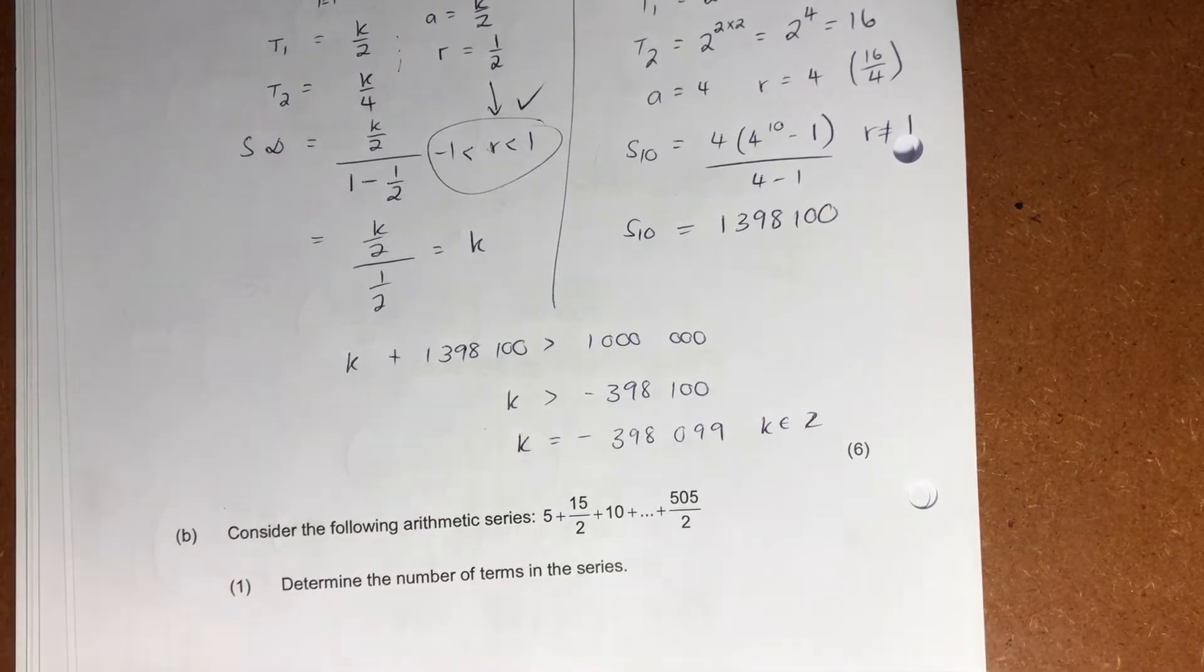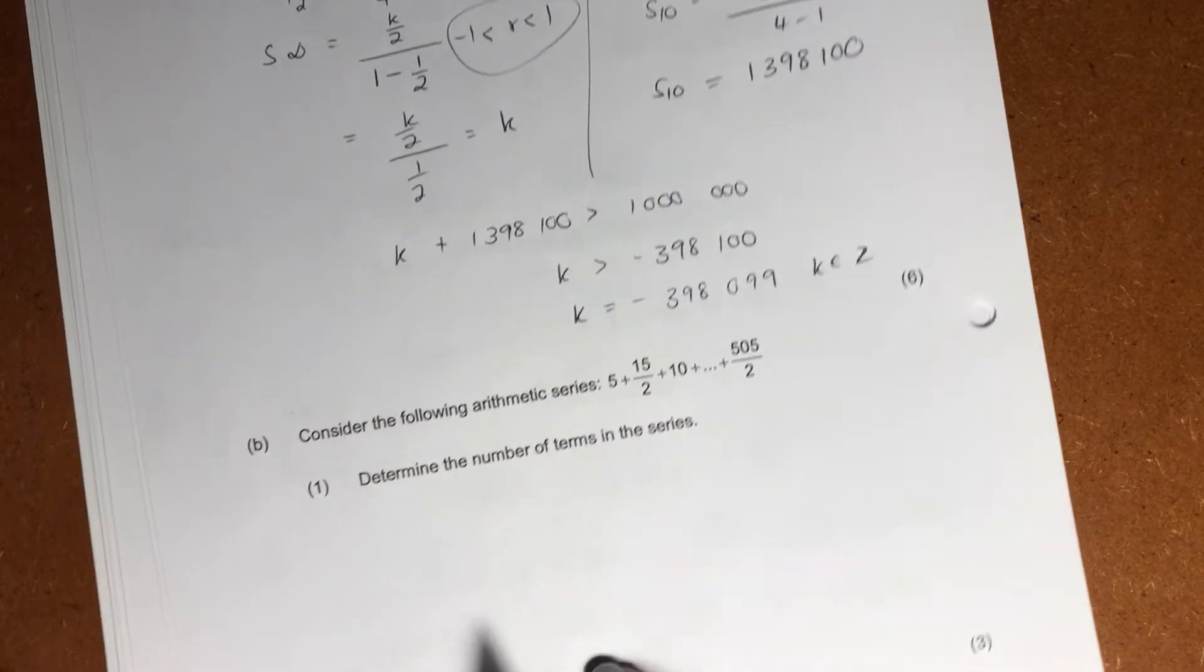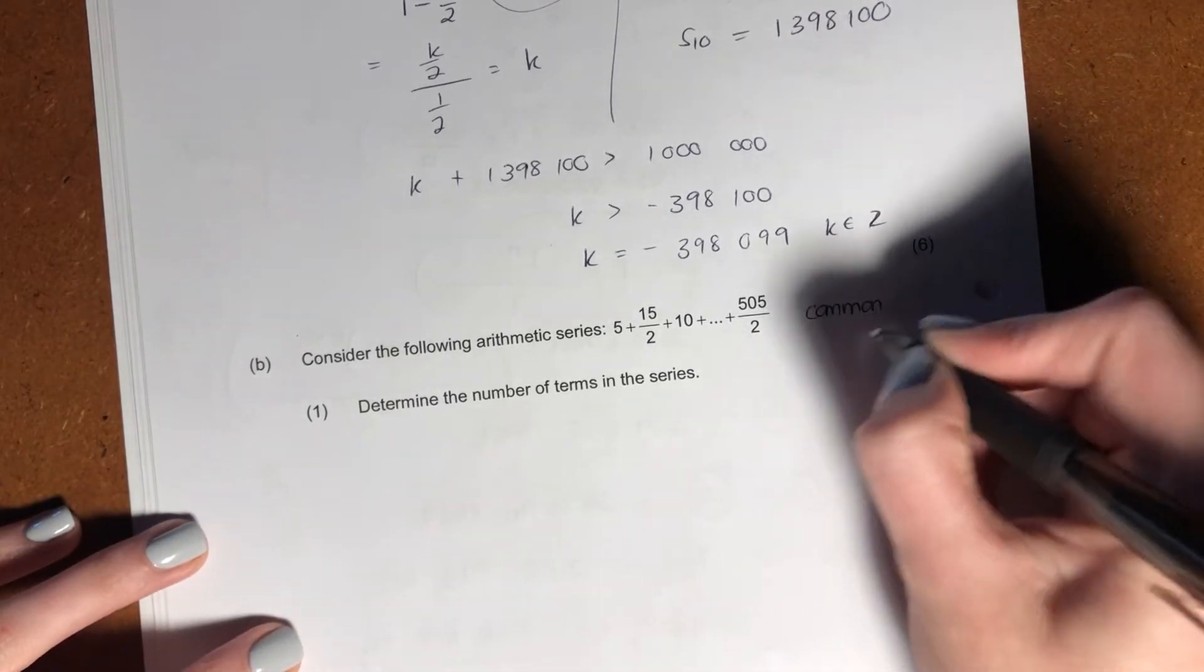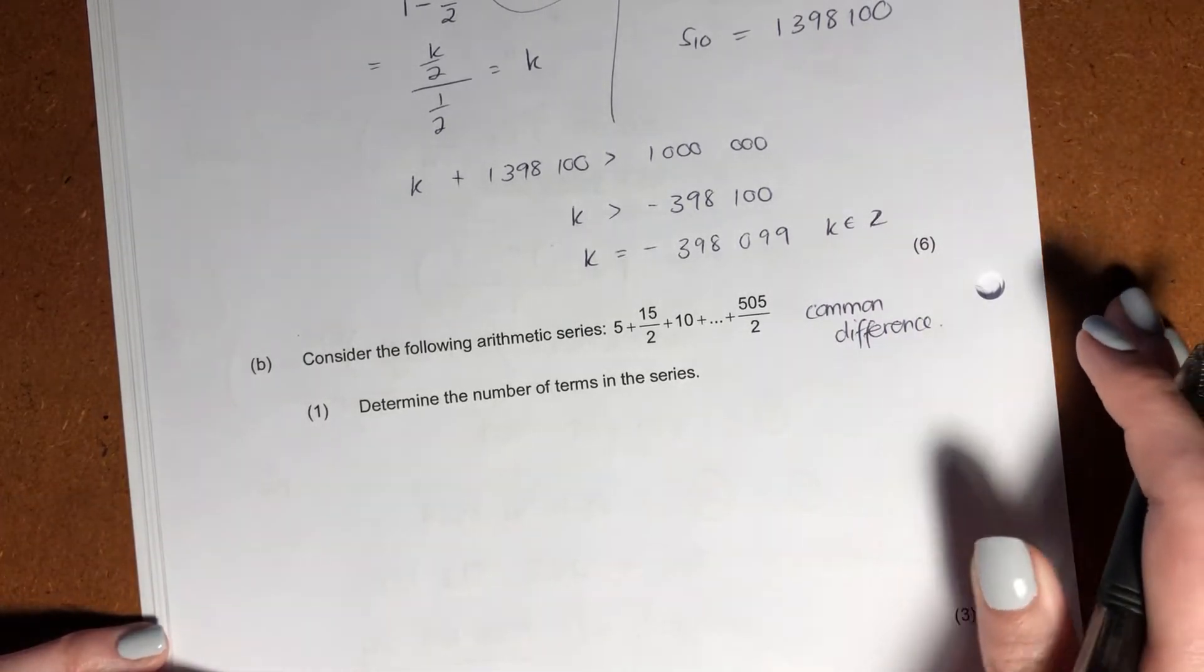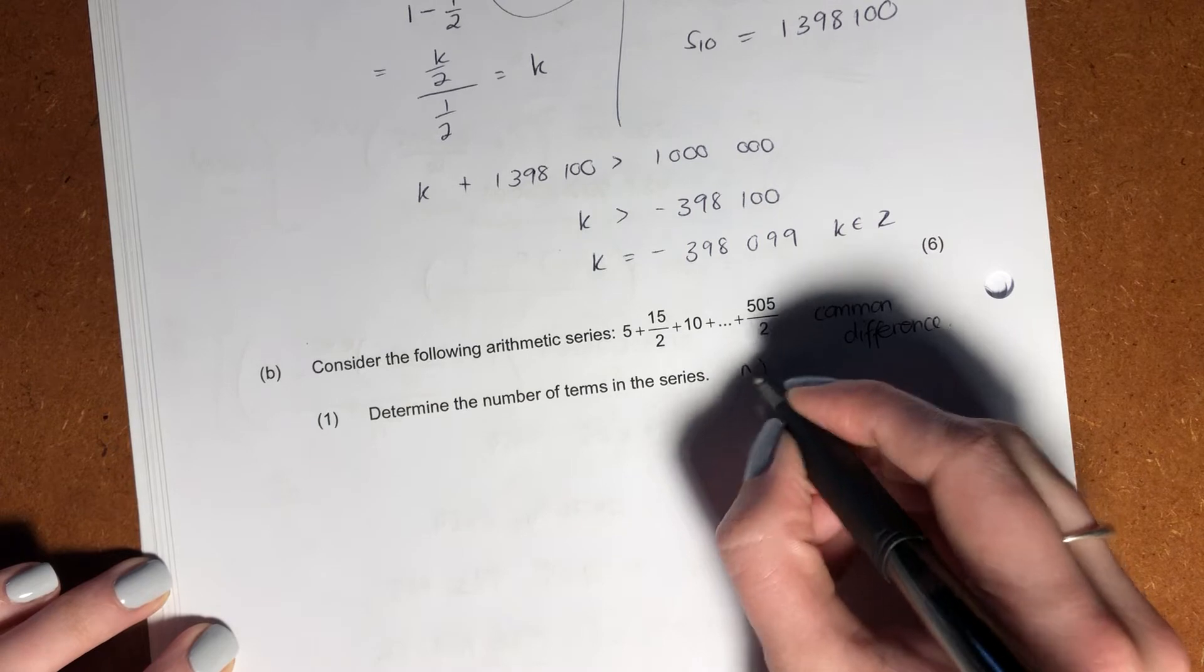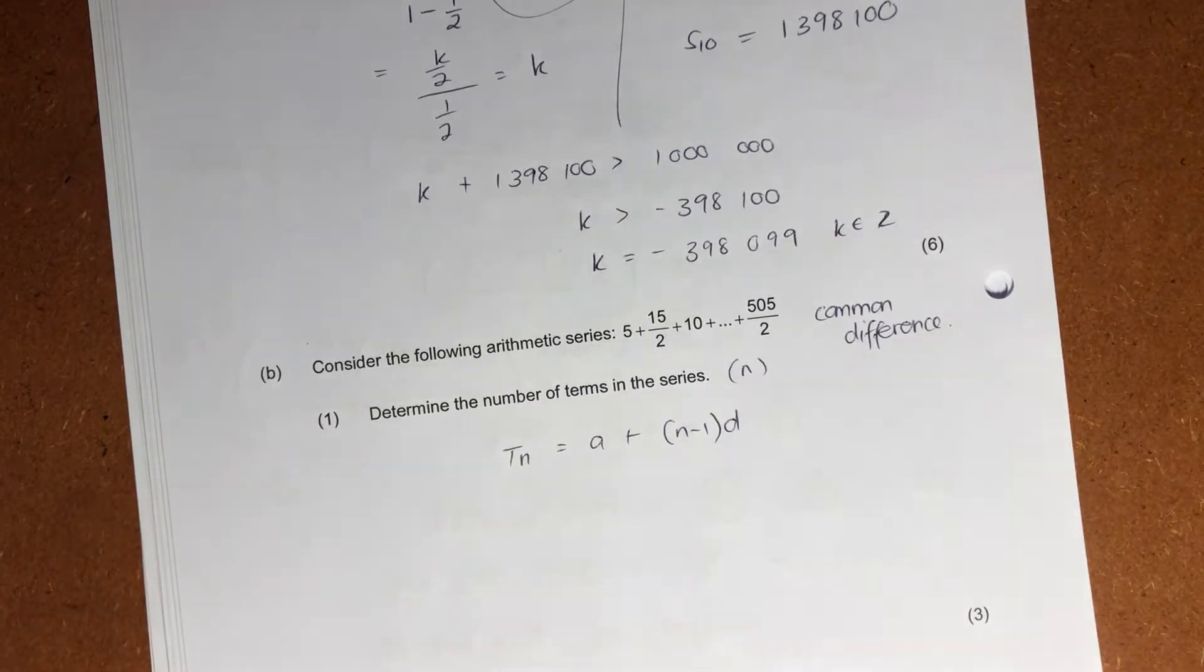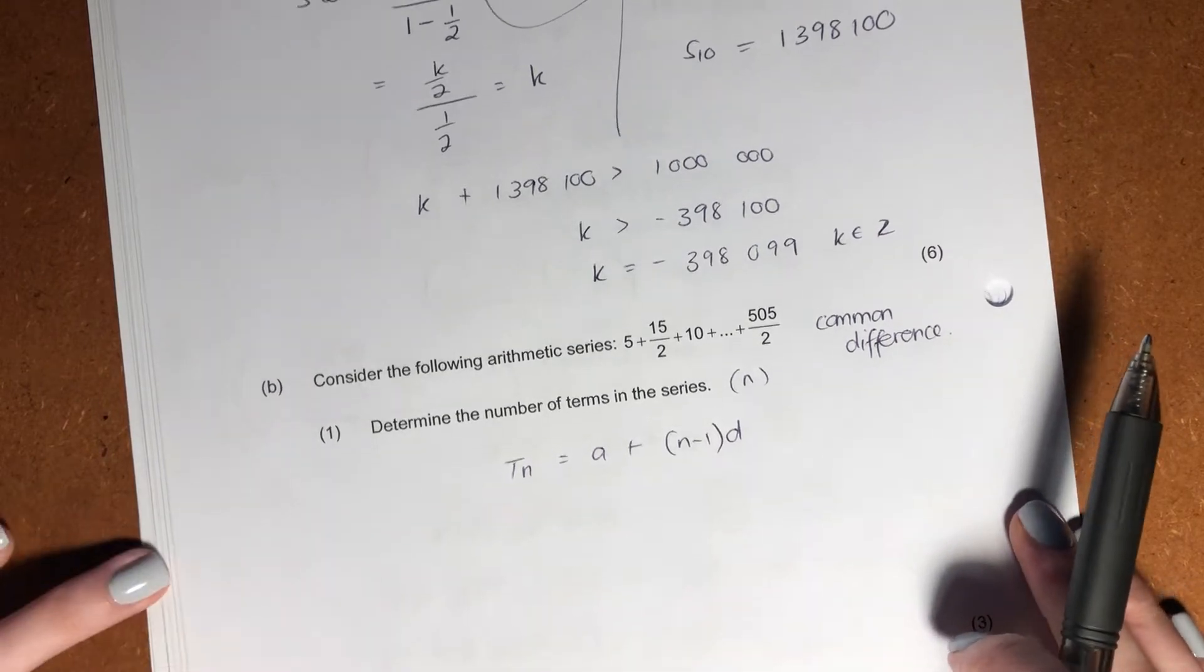Work very methodically. With these questions, you have to break them down, otherwise you will panic. You need to say, okay, what is it that I know? What is the formula that's applicable? Let's do the next question now. It says, consider the following arithmetic series. So now, arithmetic series, what are we thinking? We're thinking a common difference. So we're not thinking ratios anymore, we're just thinking a common difference. It says, determine the number of terms in the series. So we could say, well, we want to find n. And we know that tn equals a plus n minus 1d. Don't freak out if you don't know this. It is on your formula sheet. I just know it off by heart. There it is there. Let's work out again.